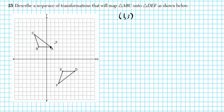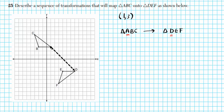That's not the only transformation used, but there has to be a reflection of some sort in our transformation. We want to go from point A, which is the coordinates (1, 3), and find what point A gets mapped to. A is the first letter in the first triangle, and D is the first letter in the second triangle, so point A gets mapped to point D. A gets mapped to D, B gets mapped to E, C gets mapped to F. Let's focus on A.